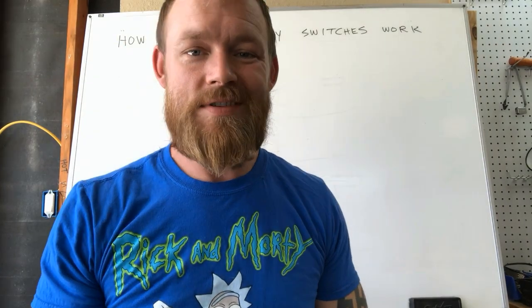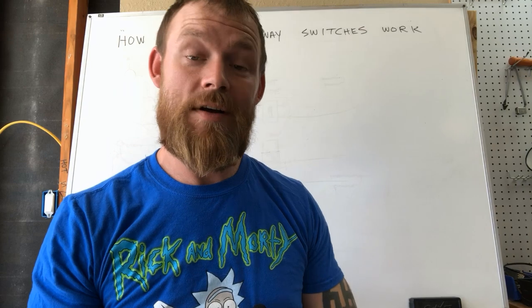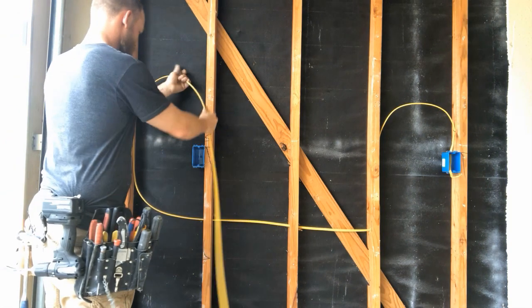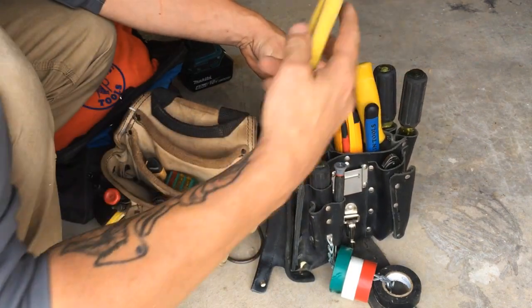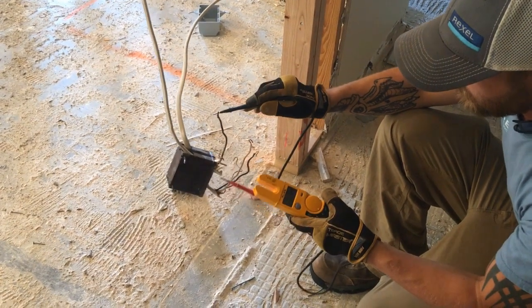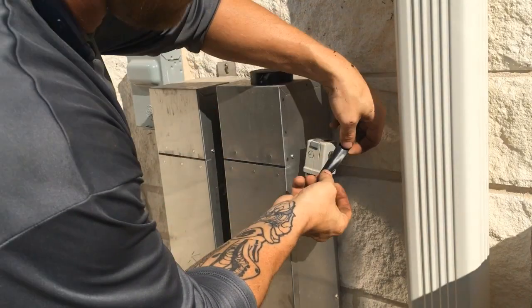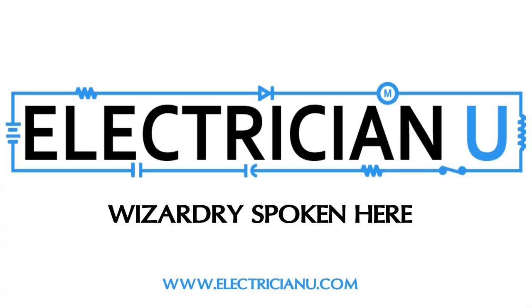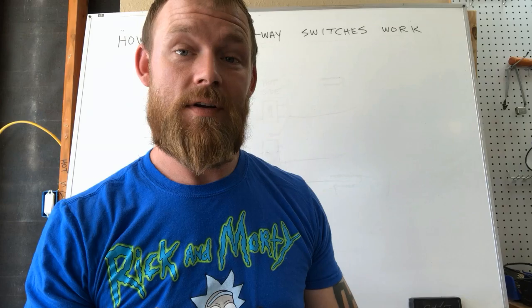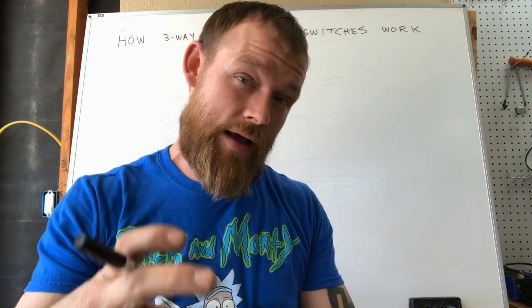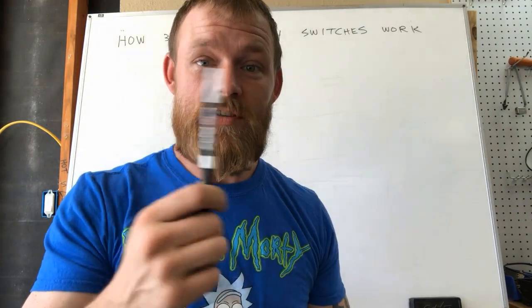What's going on everyone? This is Dustin Stelzer with another episode of Electrician U, and today we're going to talk about how three-way and four-way switches work. This episode is actually schematics. I'm going to draw out the circuitry and how current flows through the devices. If you're interested in seeing the actual wiring and how to wire for a three-way or four-way, click on some of these cards and they'll show you.